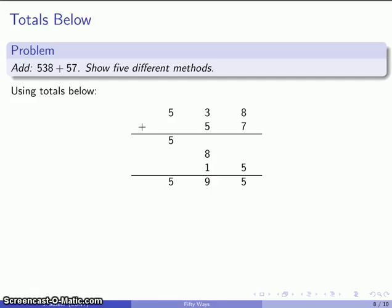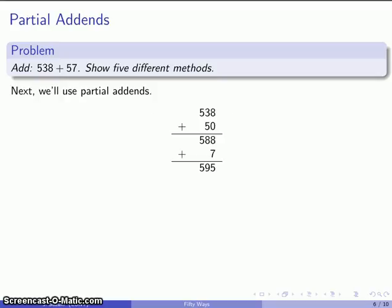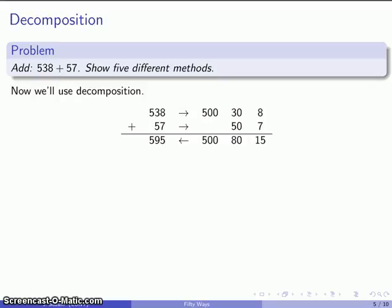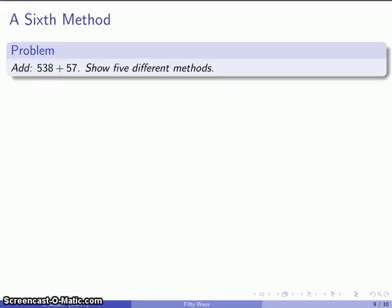Now, you might notice that none of these methods that we've used is the standard algorithm. We have totals below. We have counting past. We had partial addends. We had decomposition. And we had counting on. Five distinct ways that look nothing like the standard algorithm. So, let's take a look at the standard algorithm. That'll actually be our sixth method.